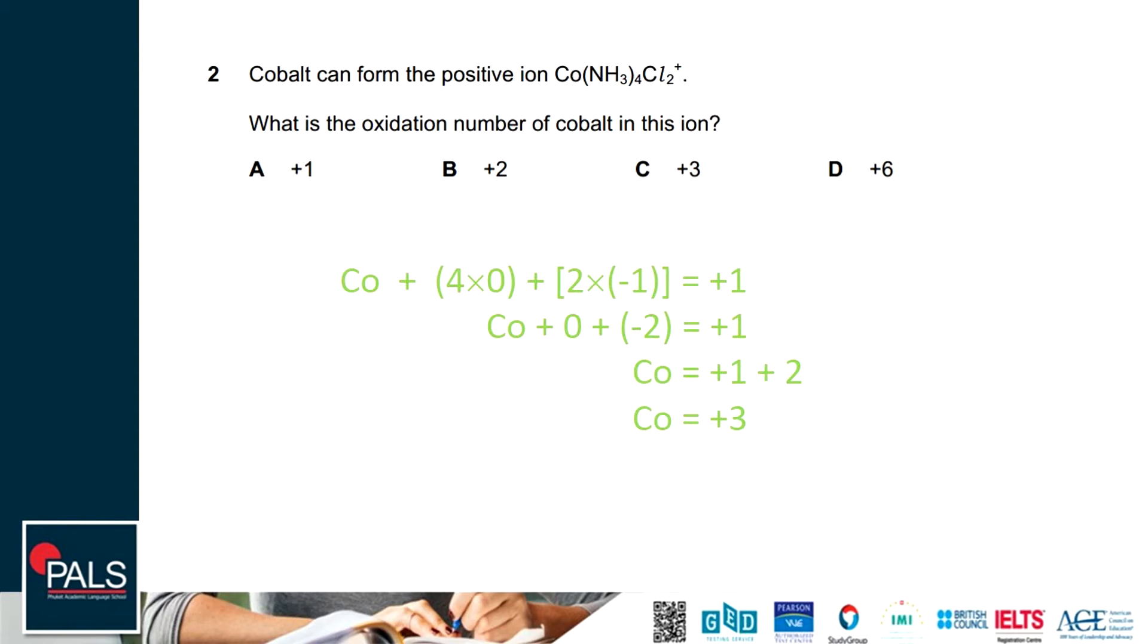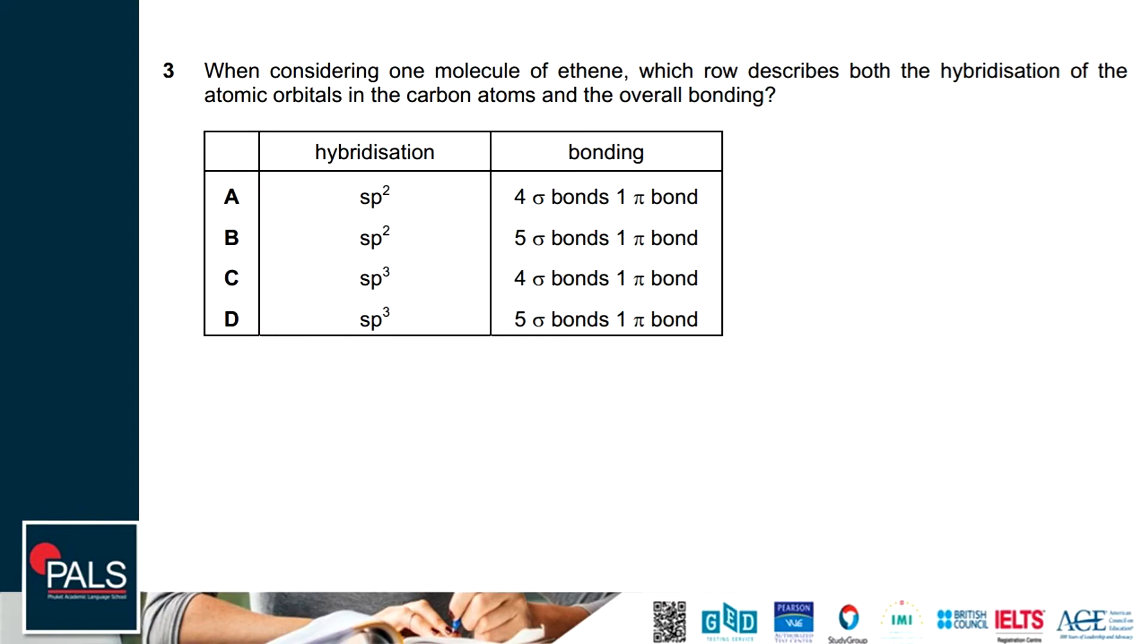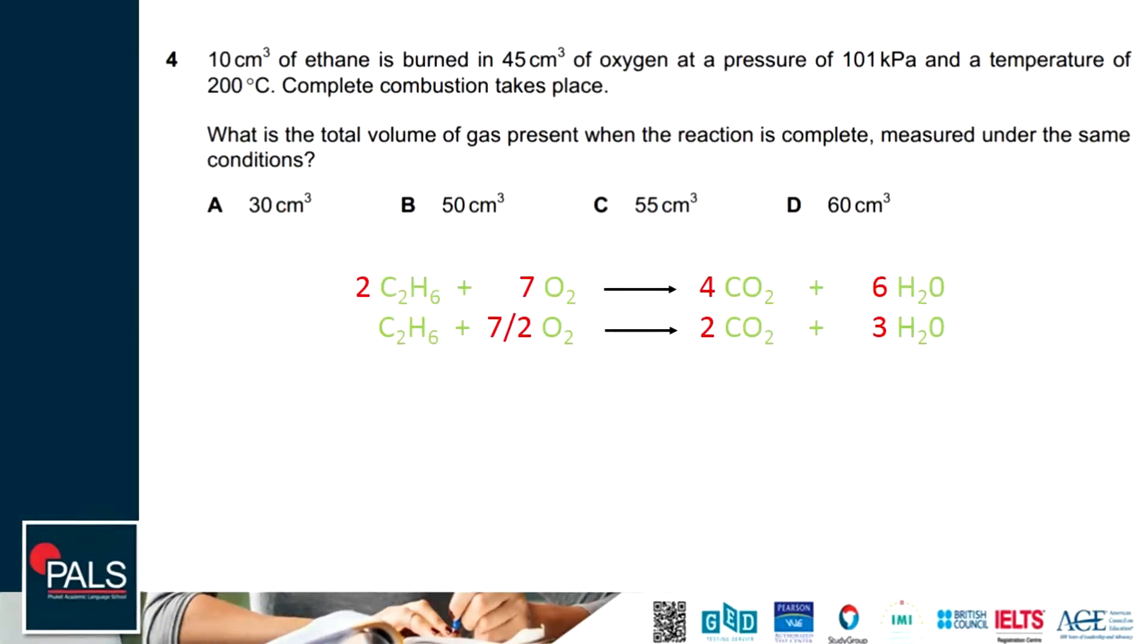Question 3: when considering one molecule of ethene, which describes both the hybridization of atomic orbitals in the carbon atoms and the overall bonding? Carbon in double bond, because this is ethene, so carbon is in double bond. Carbon in double bond has sp² hybridization. For bonding, the double bond consists of one pi bond and one sigma bond, and a single bond will be sigma bond. So there are five sigma bonds and one pi bond. The correct answer is B.